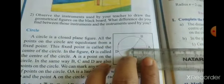See in this, accurate 1.5. From another, OA also 1.5. It is called as radius.